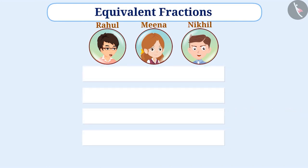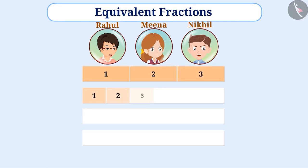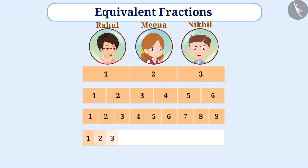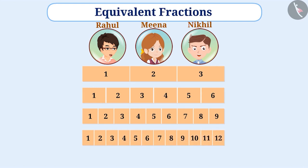They folded the first paper and made three equal parts of it. Similarly, they made the second strip into six equal parts, the third strip into nine equal parts and the fourth strip into twelve equal parts. If they have to share the parts of each strip equally among themselves, how will they do it?